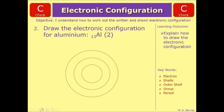Now when it comes to drawing your electronic configuration, fill it in from the inside out. So your first shell has 2, that leaves you with 11. Second shell, 8.